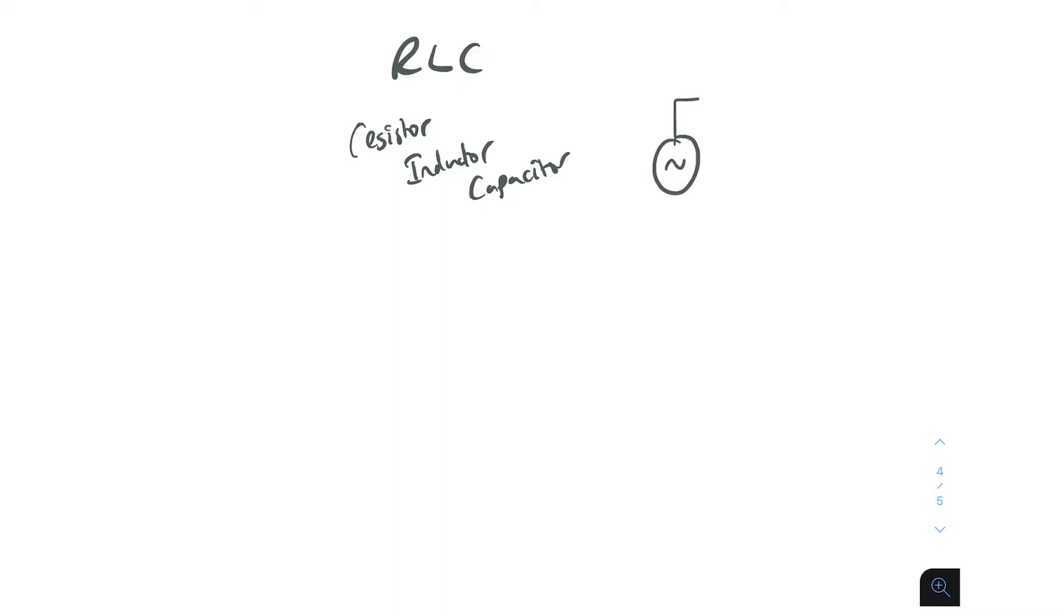A typical one you'd see is, you know, you'd have an AC signal there. So here you go, your R, your L, you've got your C.